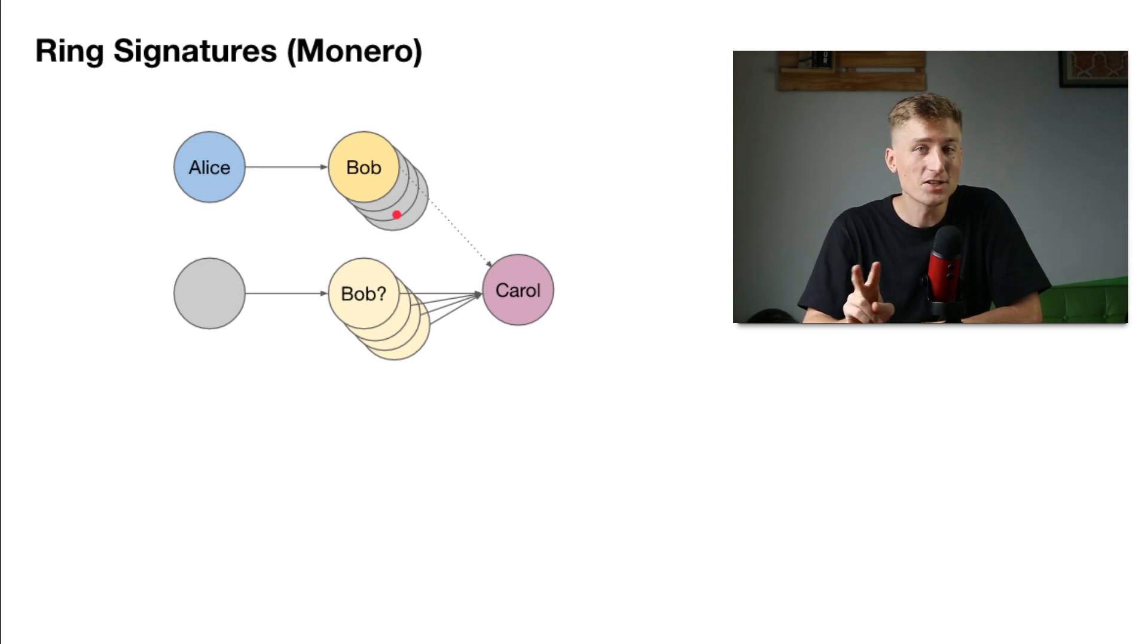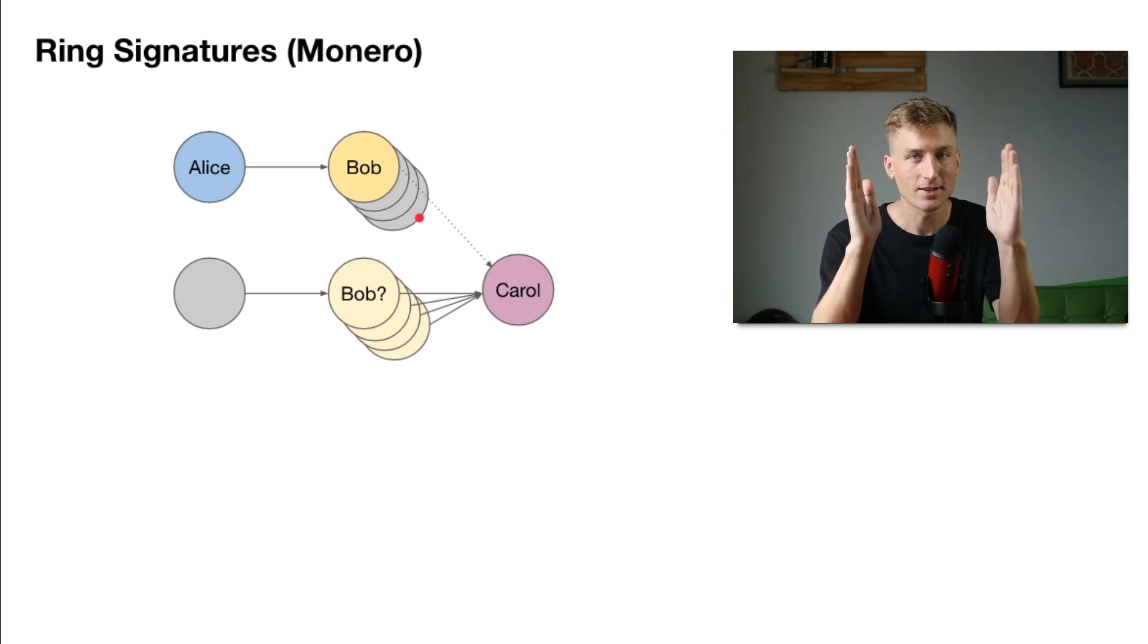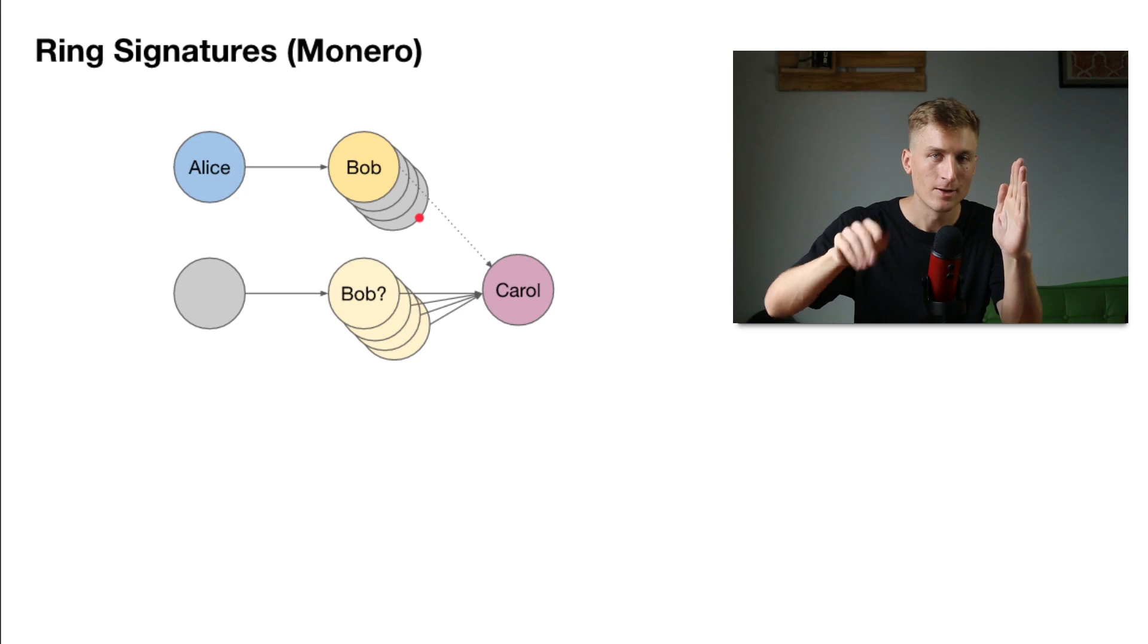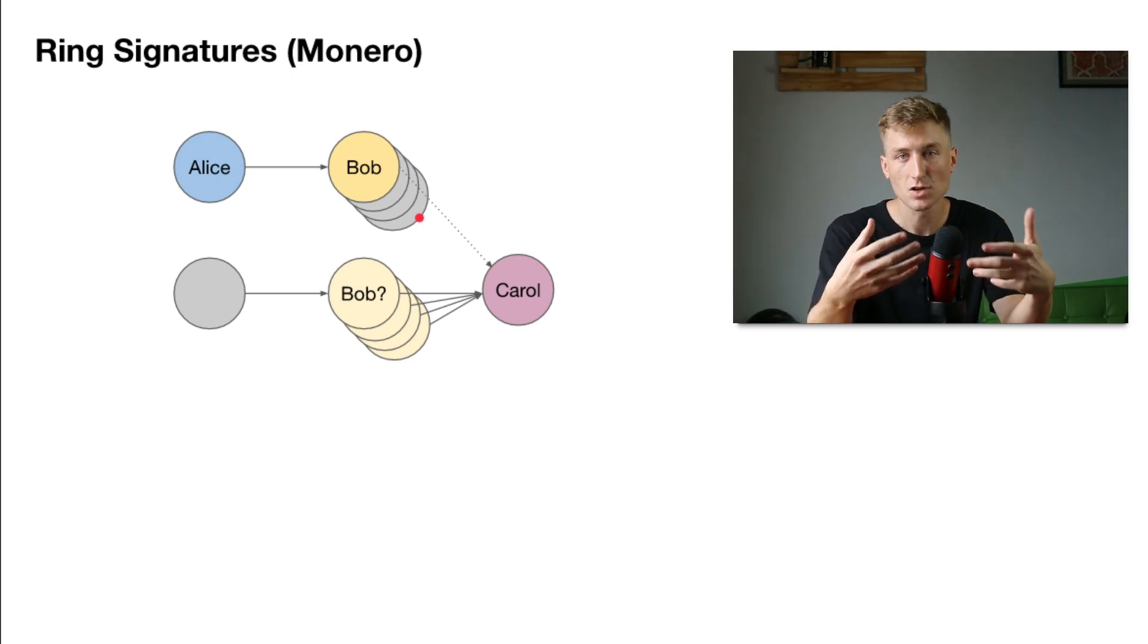The second thing to consider is how vigilant he is about not linking his different addresses. So here we saw that if Bob uses both outputs to pay Carol, these addresses can get linked. And if there's enough of these, a neural net or like an AI can basically start to identify patterns and figure out which accounts are being controlled by a common person. And there's lots of different ways to do that. The third thing is the quality of the decoys. Let's say one of these decoys is from 2017. Well, it's very unlikely that an output from 2017 is going to be spent today. So if Bob had 11 people in his ring signatures and we can rule out that 1, now his anonymity set is down to 10.